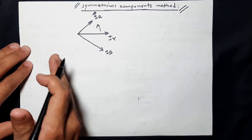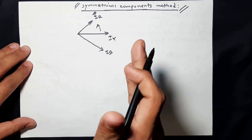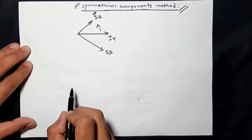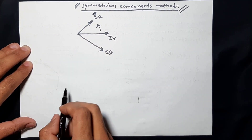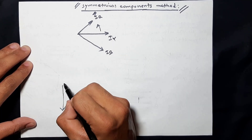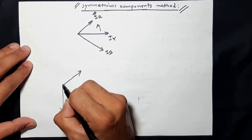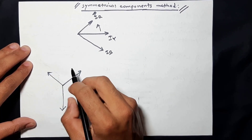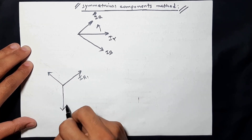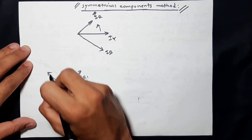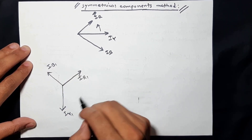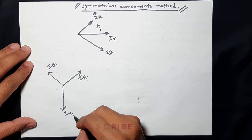We will break the system into three pairs: positive sequence components, negative sequence components, and zero sequence components. Looking at the positive sequence component, we have IR1, IY1, IB1. Going into the positive sequence — what happens with red, yellow, blue?